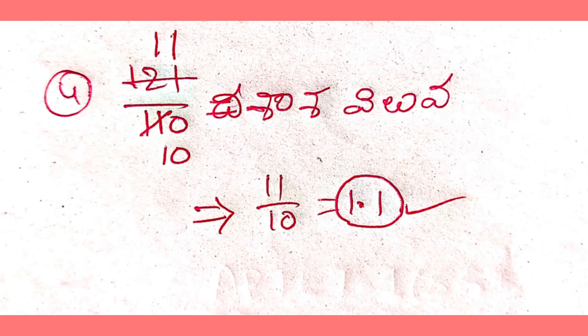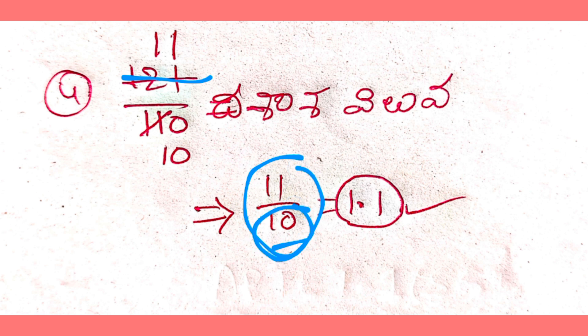This is very simple. Here we have 121 by 110. The numerator 121 is 11 times 11, and the denominator 110 is 11 times 10. So simplified, the answer is 11 over 10, which equals 1.1.